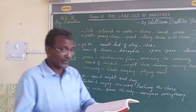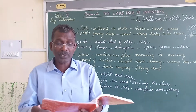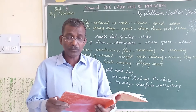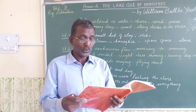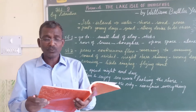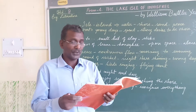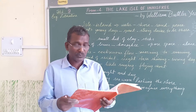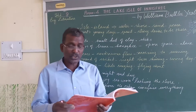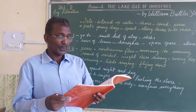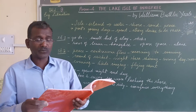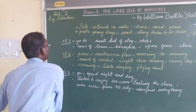Second stanza: 'And I shall have some peace there, for peace comes dropping slow, dropping from the veils of the morning to where the cricket sings. There midnight's all a glimmer, and noon a purple glow, and evening full of the linnet's wings.'